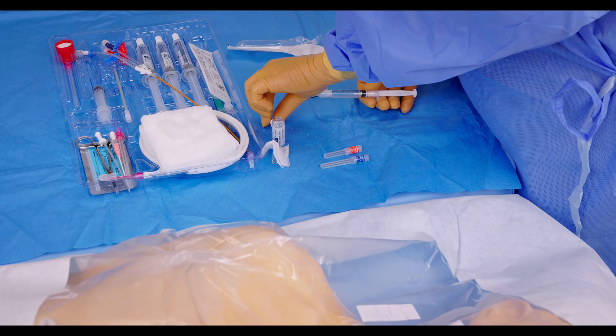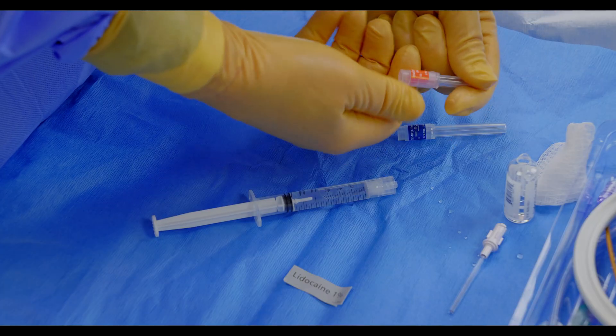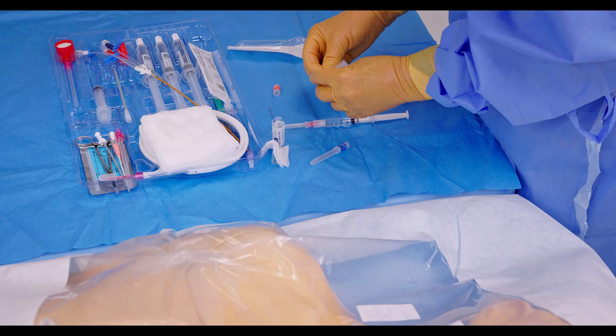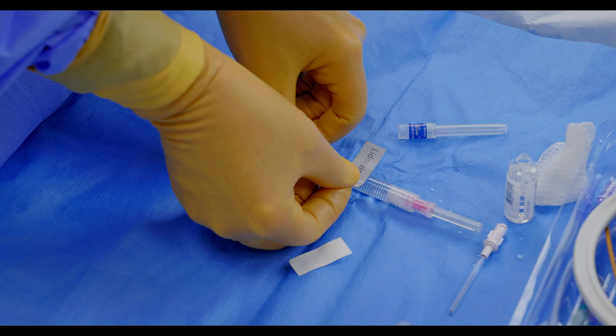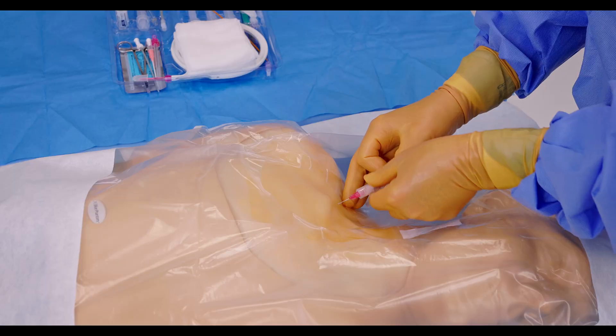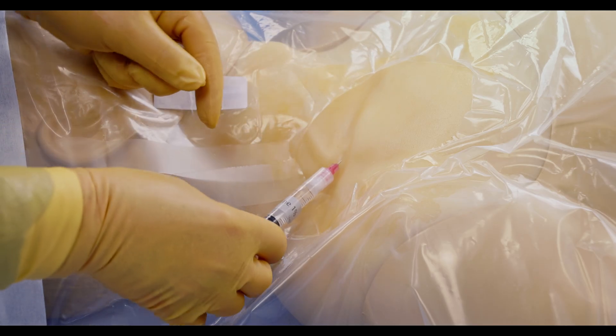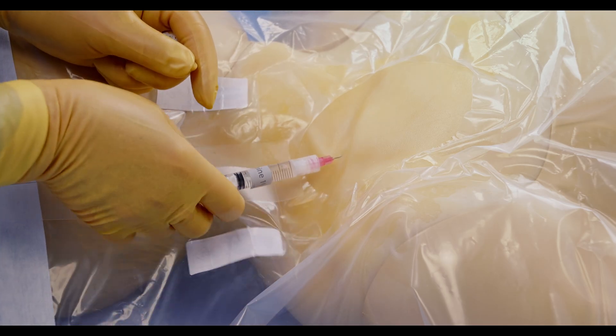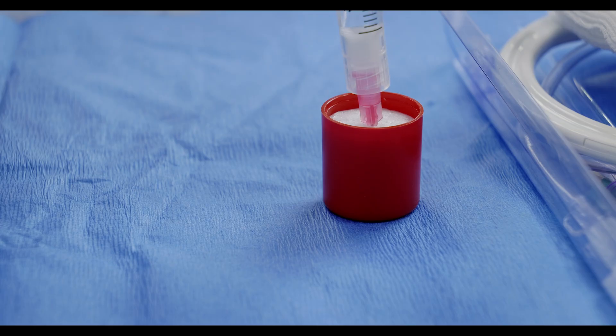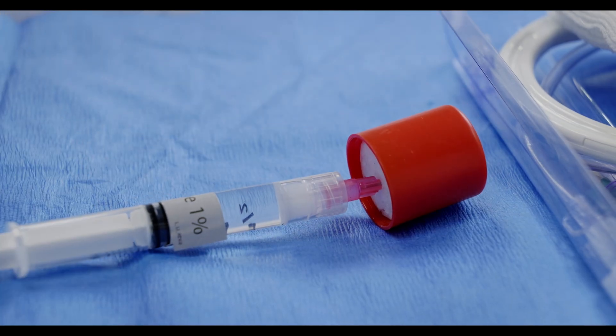Once filled, remove the filter straw and replace it with either a 25-gauge or 22-gauge Monoject needle. Label the syringe clearly with the provided lidocaine sticker to ensure accurate identification. Using a slow, steady technique, administer lidocaine to the intended insertion site. Always monitor patient comfort and tissue response. Immediately after use, dispose of the needle safely in the red sharps container provided in the tray.